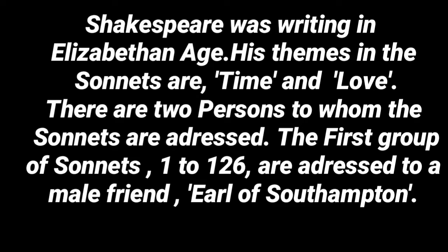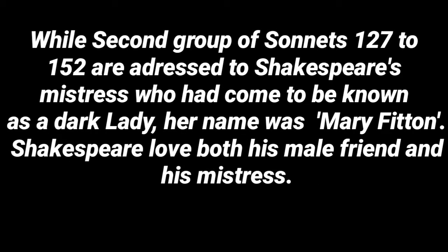There are two persons to whom the sonnets are addressed. The first group of sonnets, 1 to 126, are addressed to a male friend, Earl of Southampton. The second group of sonnets, 127 to 152, are addressed to Shakespeare's mistress, who had come to be known as the Dark Lady. Her name was Mary Fitton.